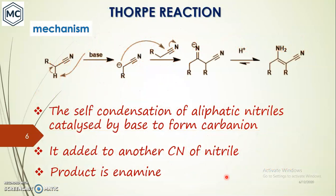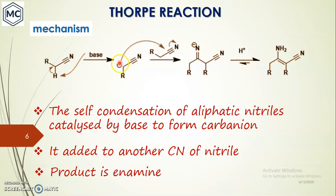Now let us discuss the mechanism of the Thorpe reaction. First, we consider the aliphatic compound — aliphatic nitrile self-condensing in the presence of base. One nitrile molecule in the presence of base has its alpha carbon deprotonated to form a carbanion. This carbanion is then added to another molecule of nitrile, attacking the carbon of the CN triple bond.